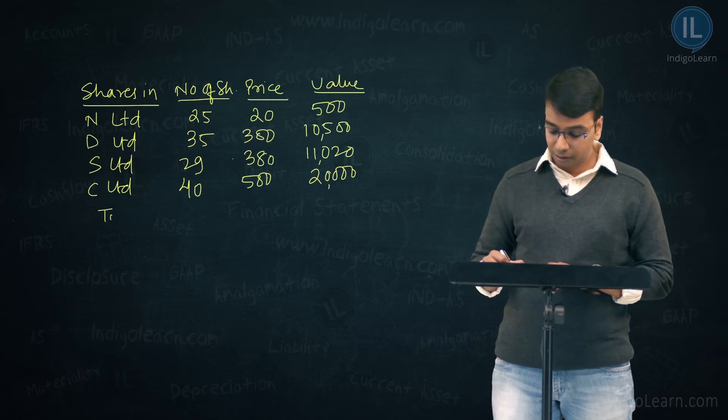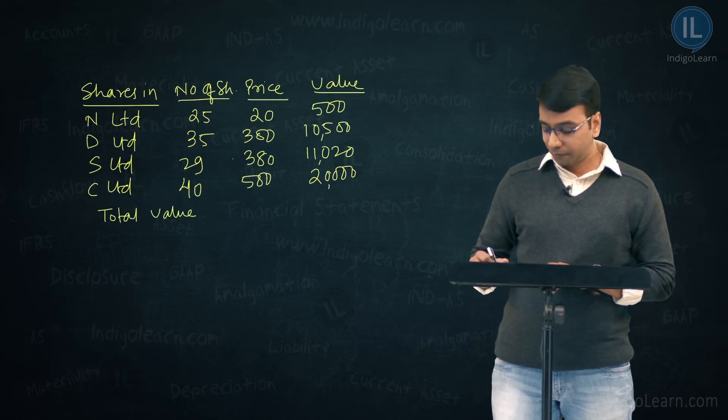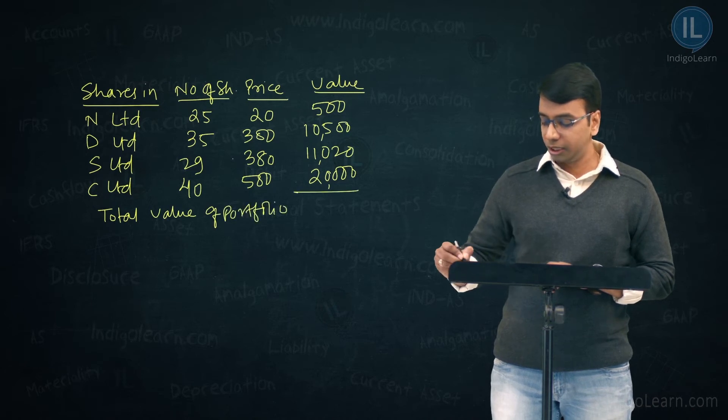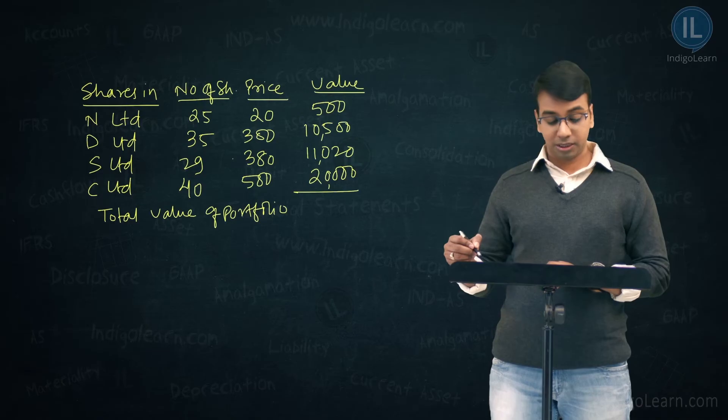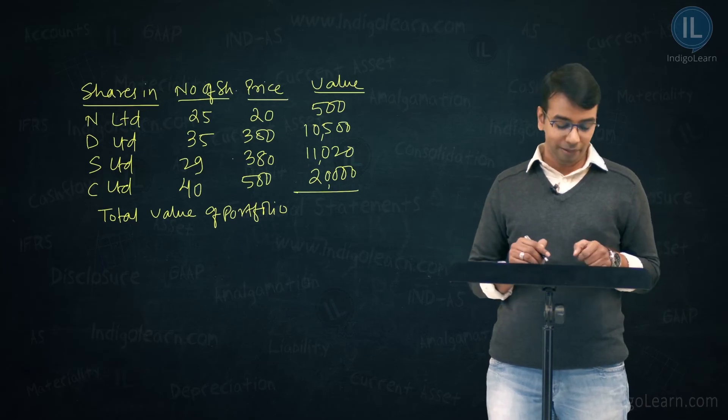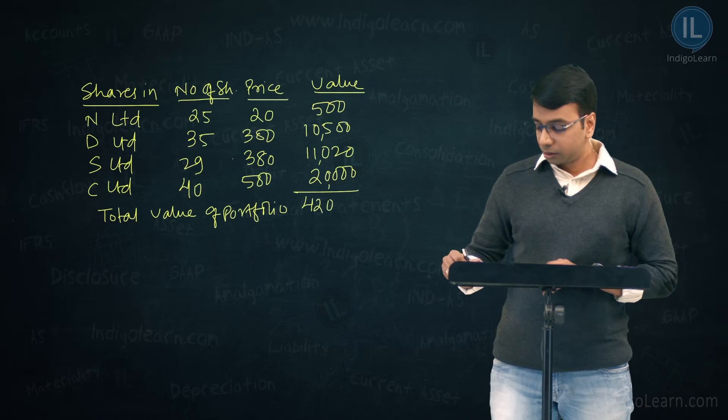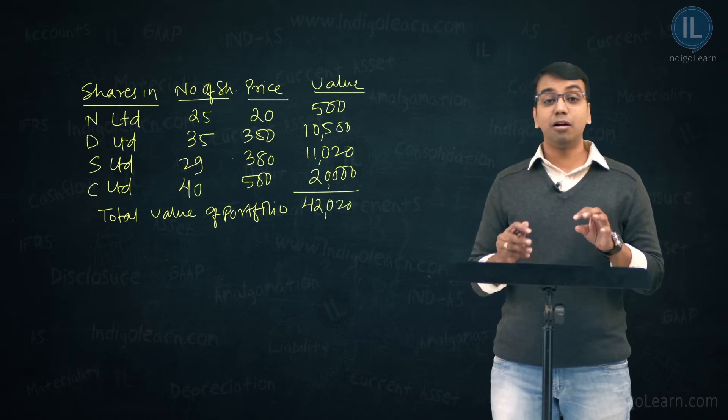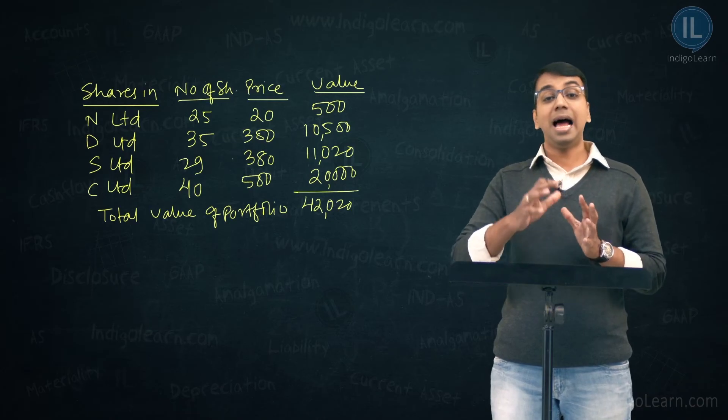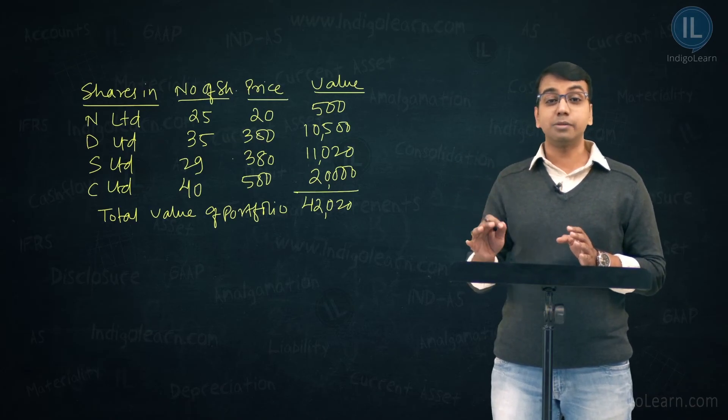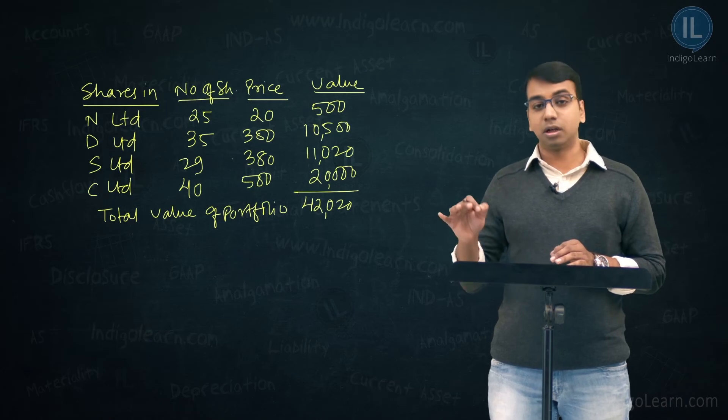What is the total value of portfolio? Total value of portfolio is, which is nothing but ₹20,000 plus ₹11,020 plus ₹10,500 plus ₹500, please do it on the calculator. I have my computations ready here, which is ₹42,020. This is the market value of the portfolio, which is nothing but the asset side. The total of investments at market value is ₹42,020.